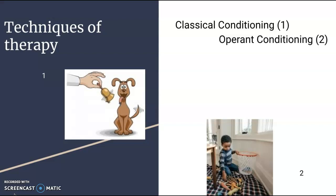Operant conditioning is when a behavior is treated by having a consequence, whether it's positive or negative. Today, therapists use it for reinforcing a person's behavior. For example, a child who struggles with doing chores — parents can reinforce their behavior by giving them an allowance. Chores are the desired behavior, and the allowance is the reinforcer.